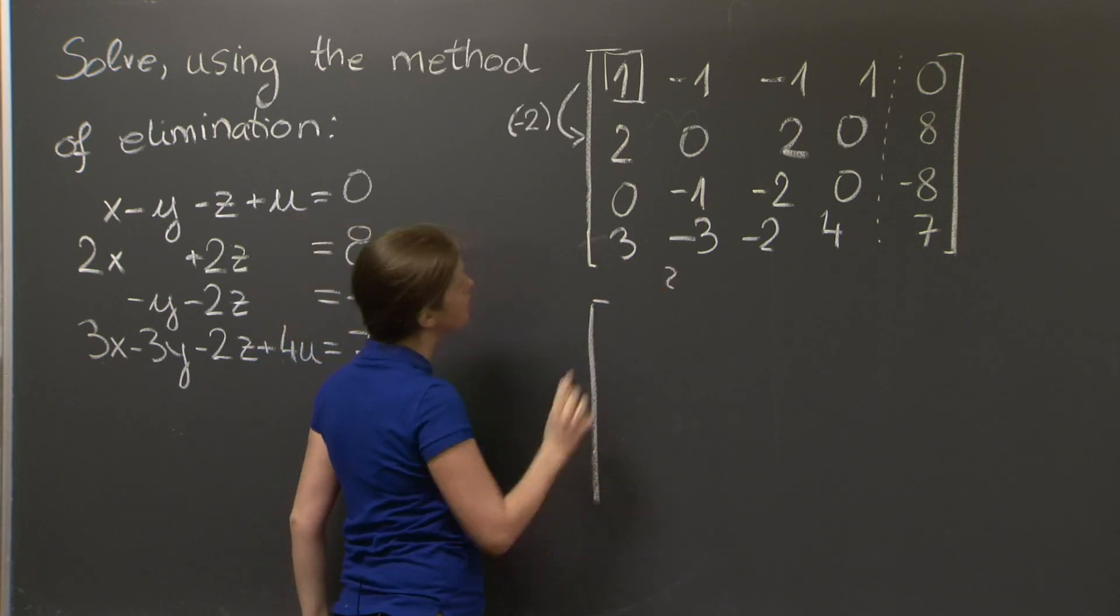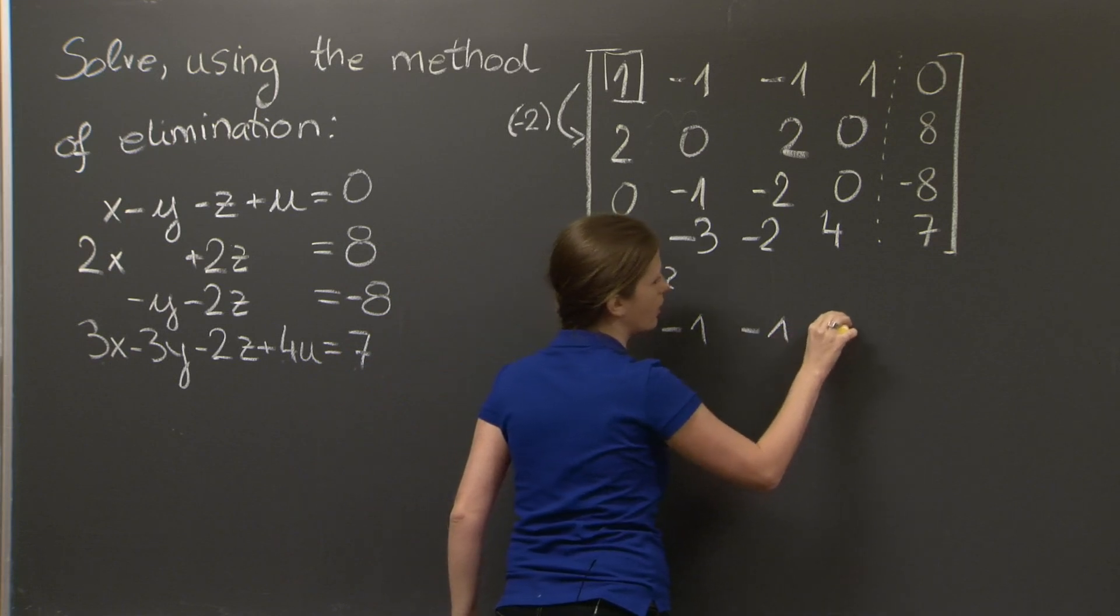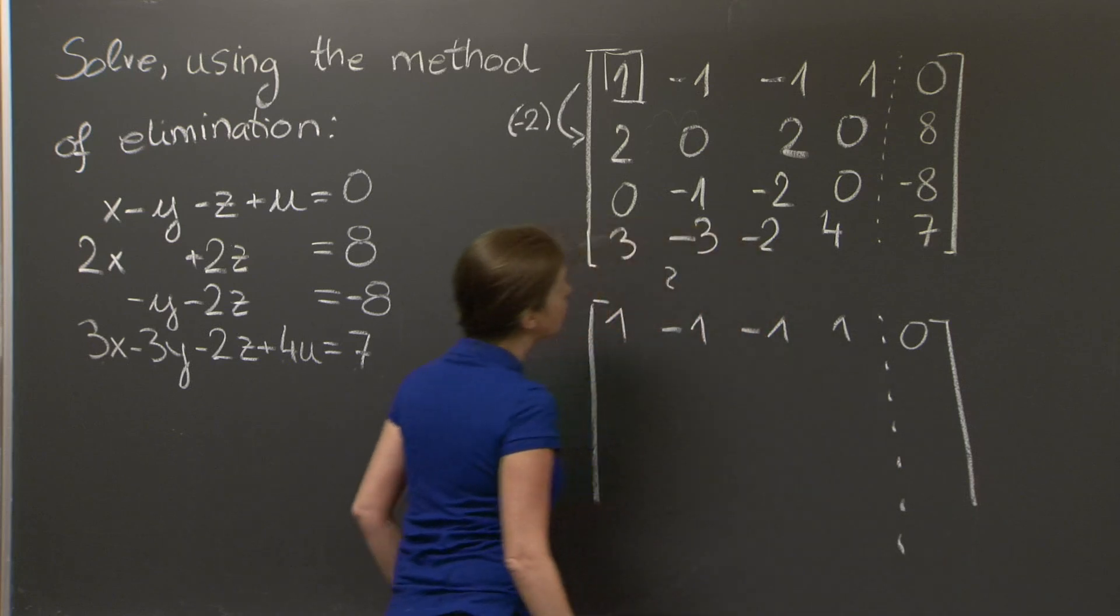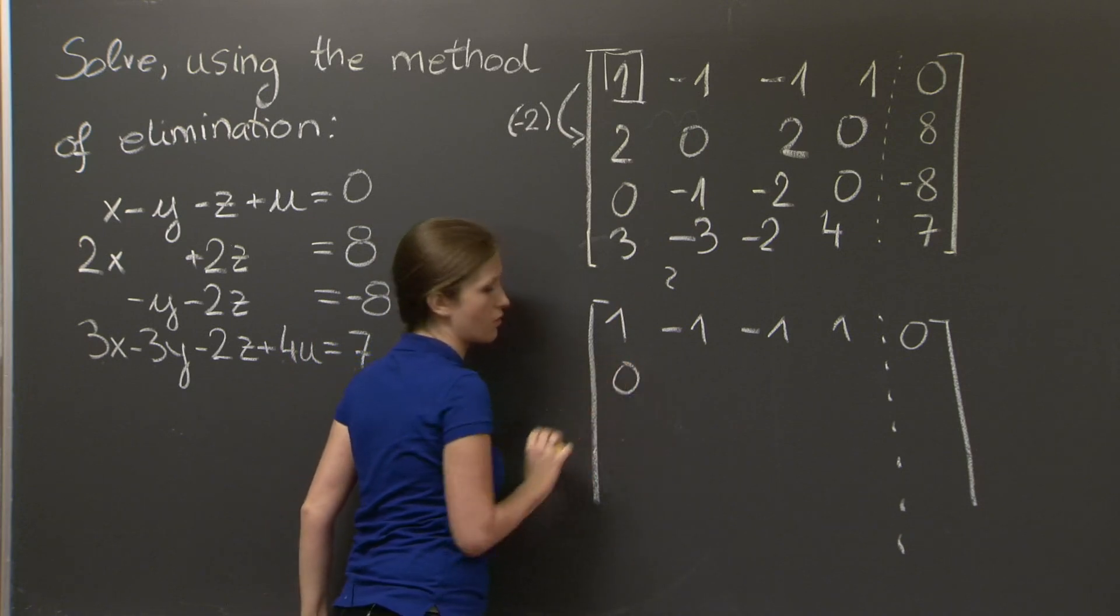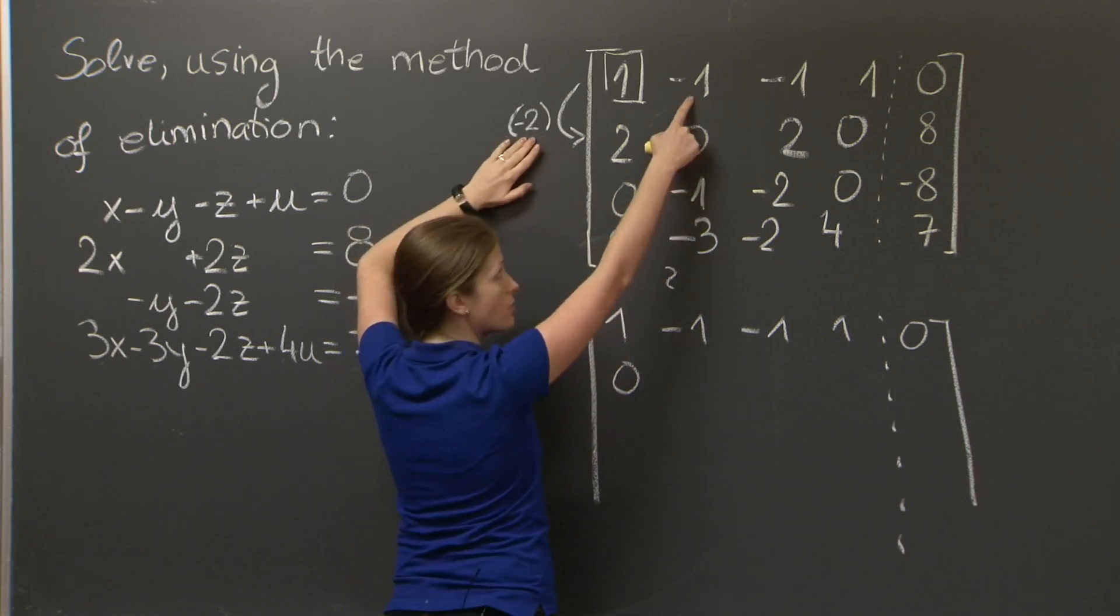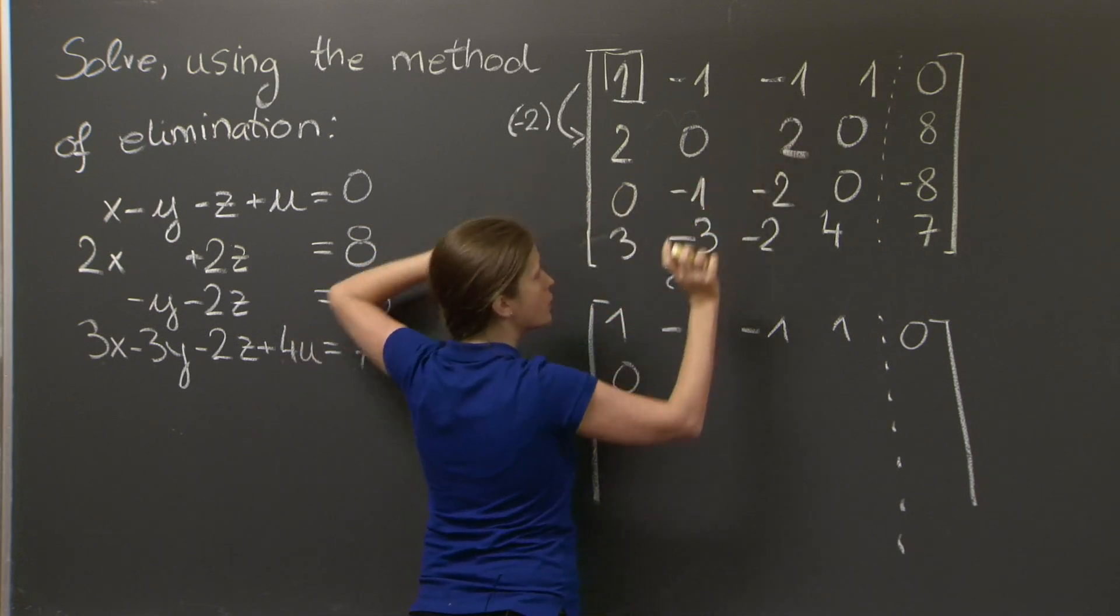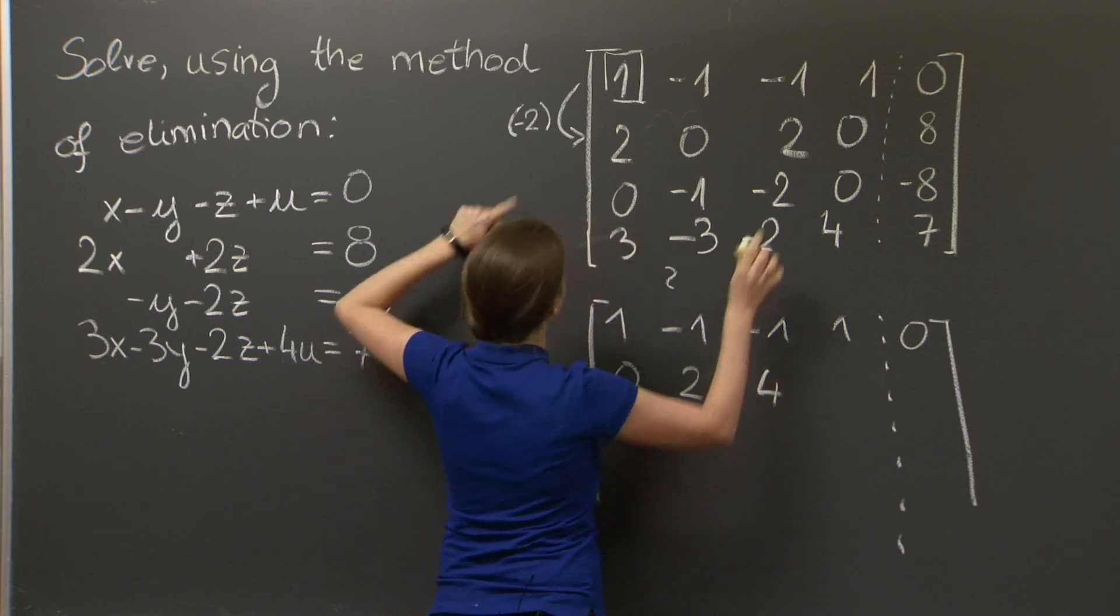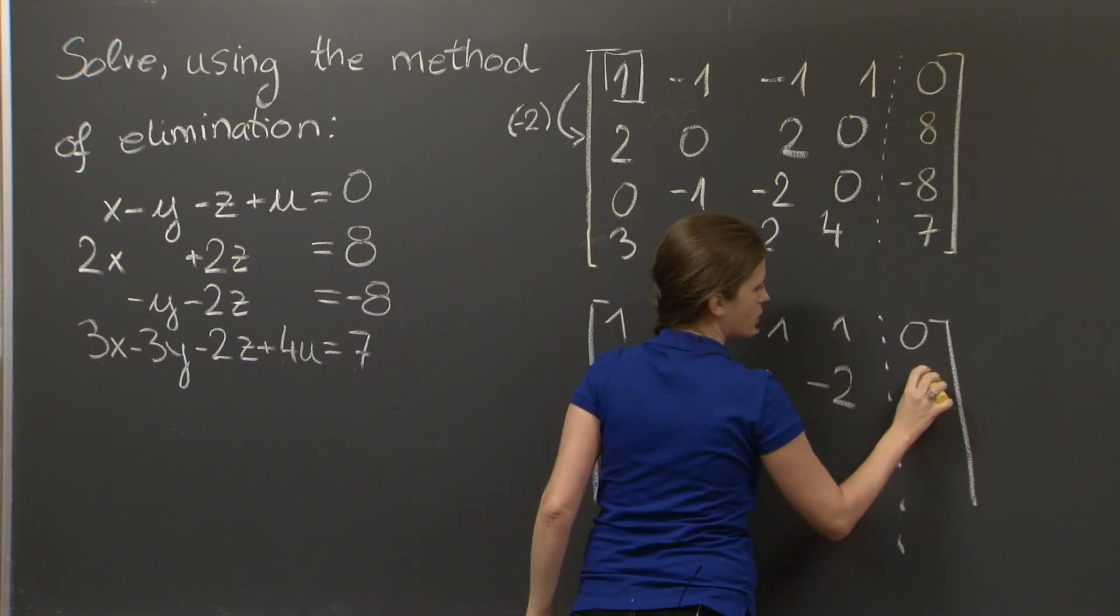So we replace this matrix with another matrix. The first row stays the same: 1, minus 1, minus 1, 1, 0. The second row gets replaced by the second row minus 2 times the first row. The aim of that is to get a 0 here, so that's good. Next, on this position here, we get minus 2 times minus 1, which is 2, plus 0, which is 2. Minus 1 times minus 2, which is 2, plus 2, which is 4. Minus 2 plus 0, which is minus 2. And 8 minus 2 times 0, which is 8.